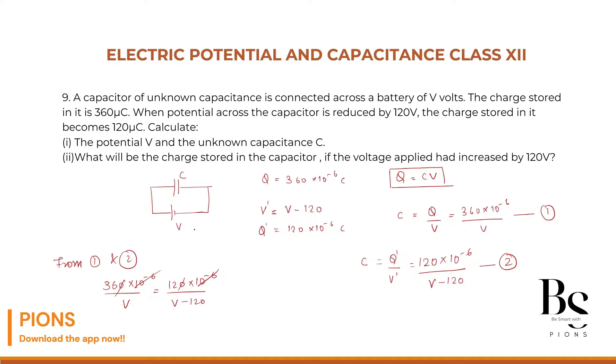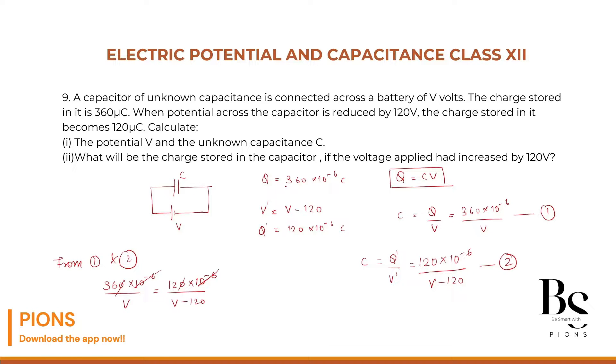What is the charge initially? 360 micro coulomb. Can we find the capacitance value? Yes. Capacitance value C equals Q by V. So Q is 360 into 10 to the power minus 6, divided by 180. 2 into 10 to the power minus 6, or you can write it as 2 micro farad. That's the capacitance value.